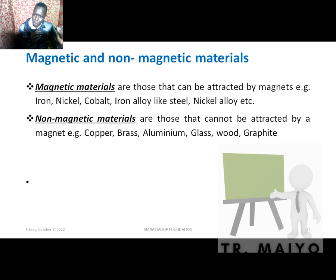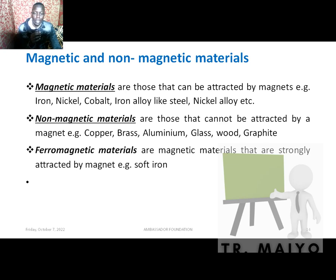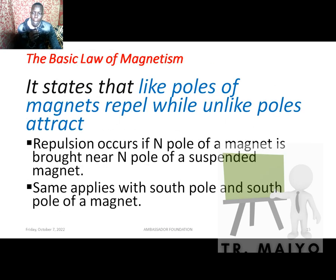Anything that is magnetic must be a metal. There is another category called ferromagnetic materials — these are magnetic materials that are strongly attracted by a magnet. An example is soft iron. The Latin word for iron is 'ferrous,' hence we call them ferromagnetic materials.